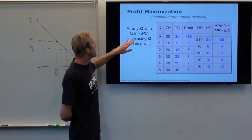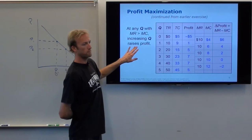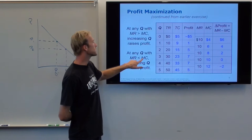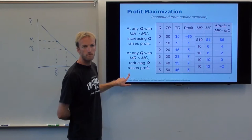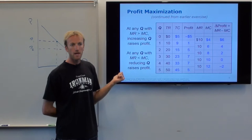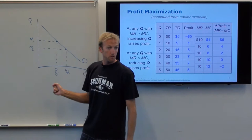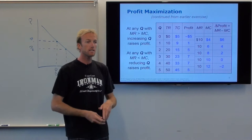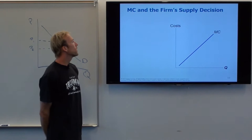Anytime marginal revenue is greater than marginal cost, make more Q. If marginal revenue is less than marginal cost, don't make that Q — reduce it. Profit maximization really boils down to one simple rule: compare marginal revenue to marginal cost. That is the foundation for all the next chapters — all you're going to do is compare marginal revenue to marginal cost. Get very used to doing that.